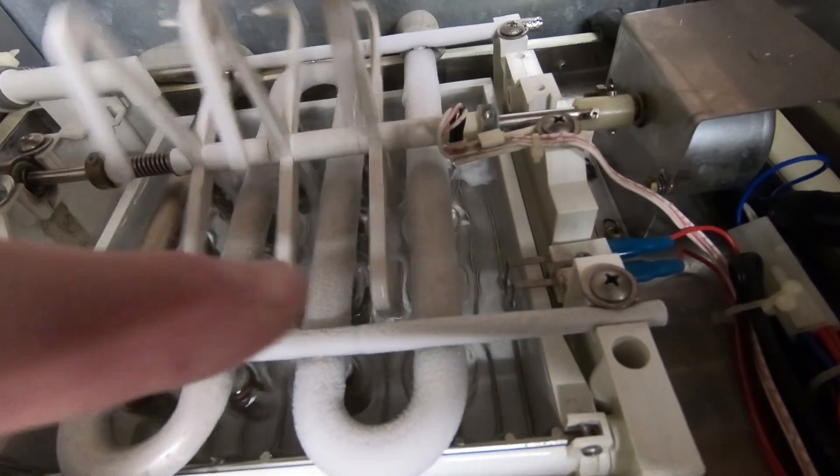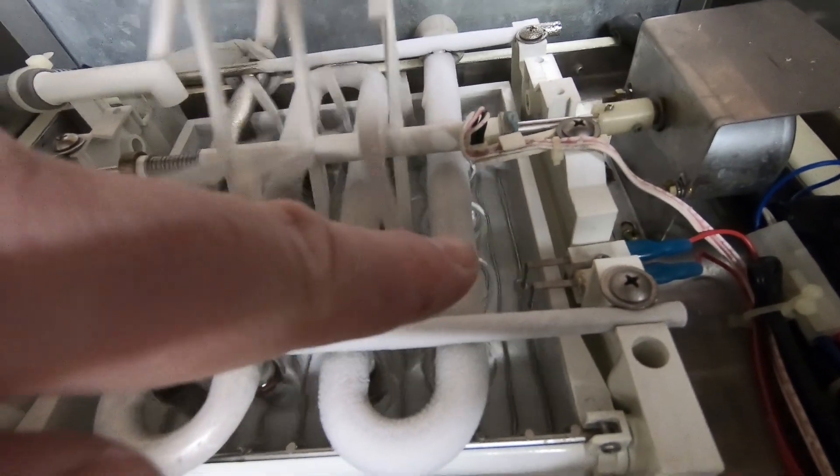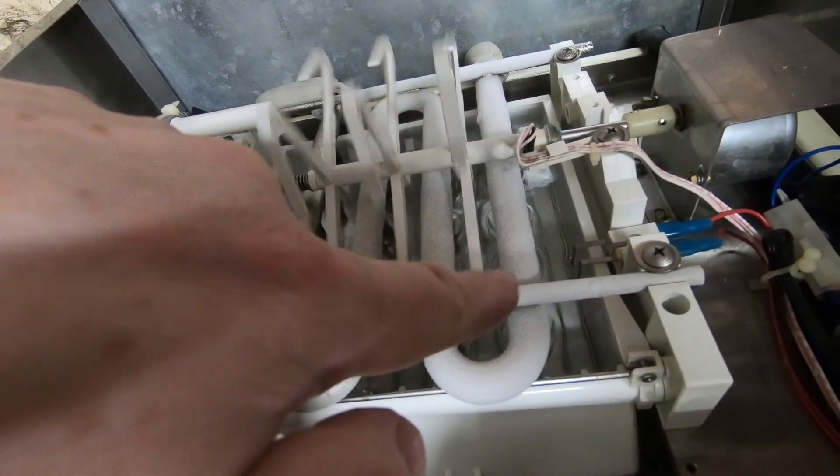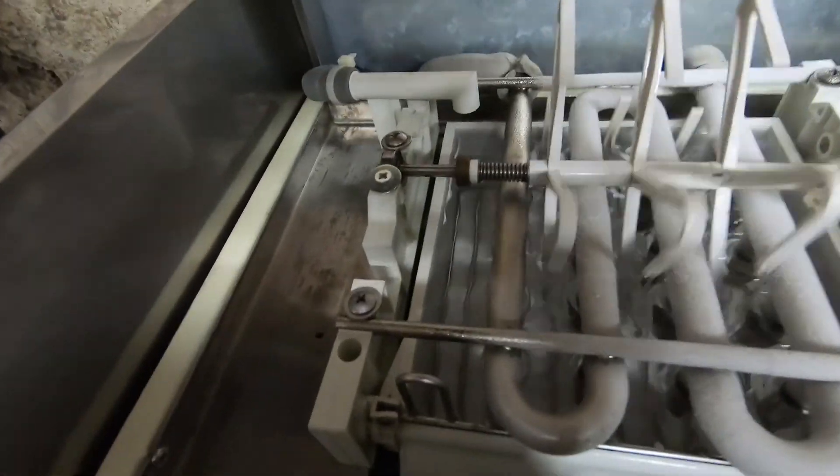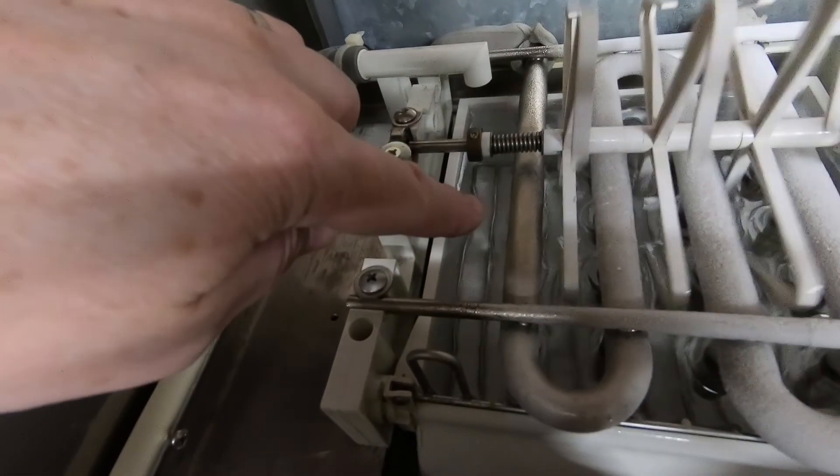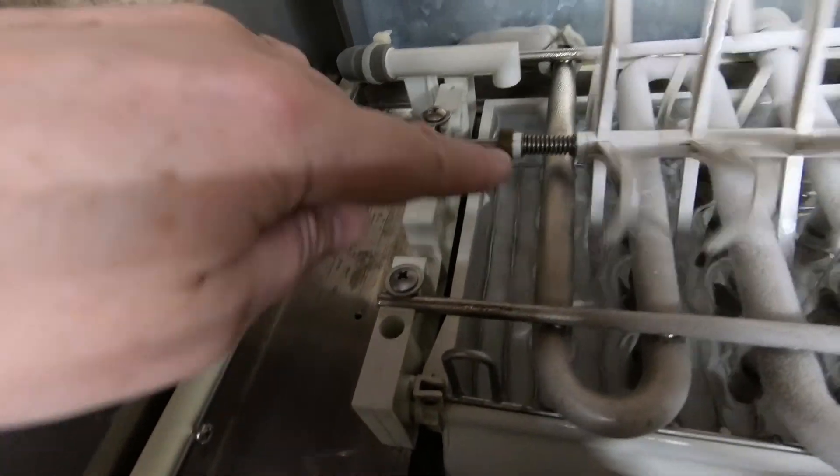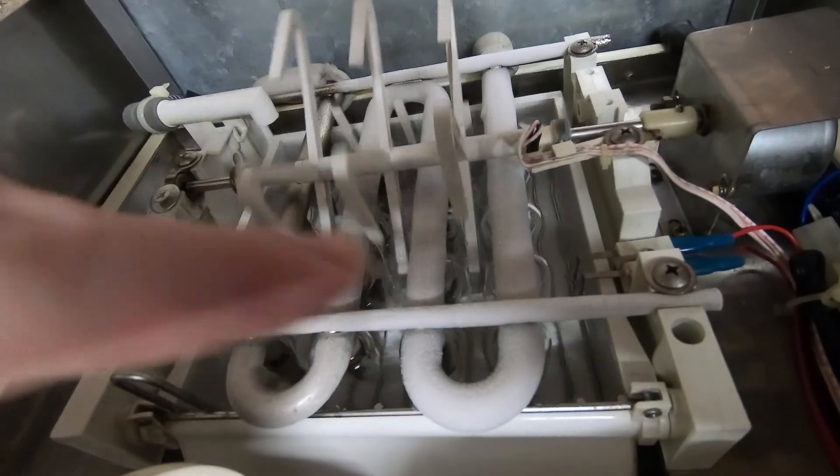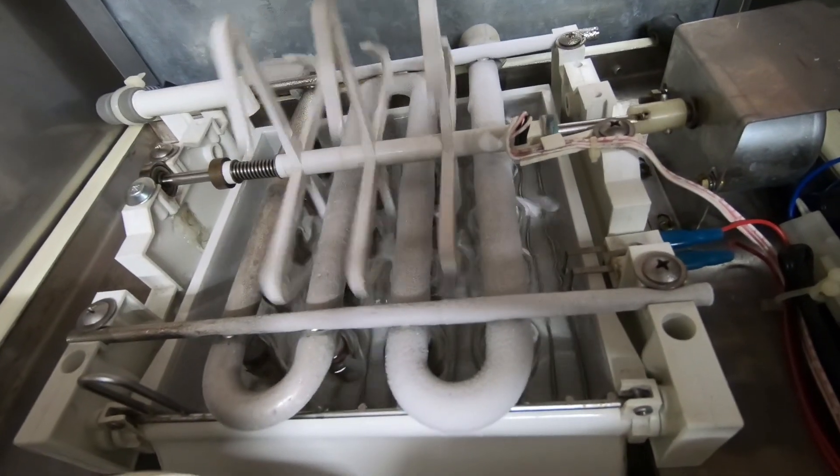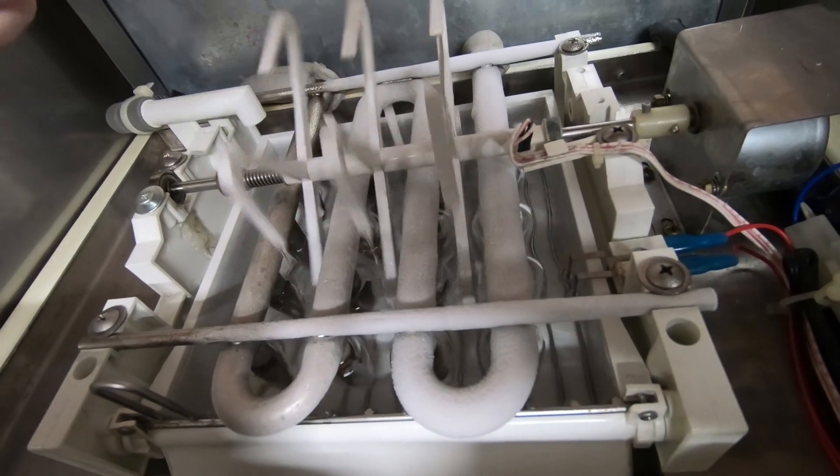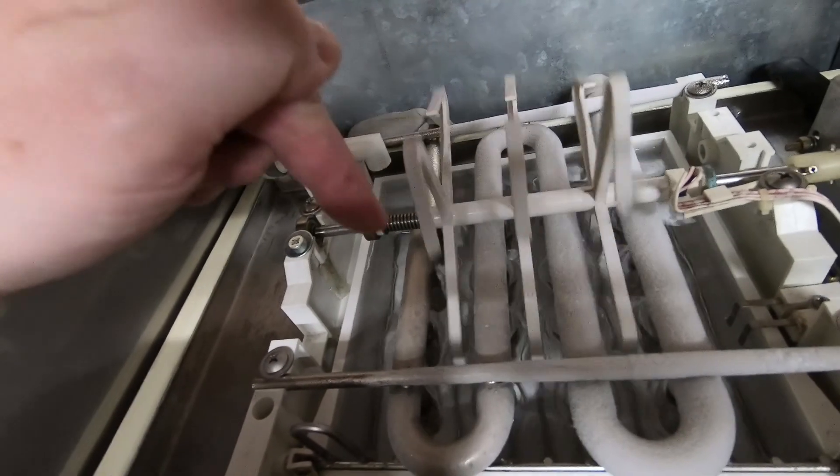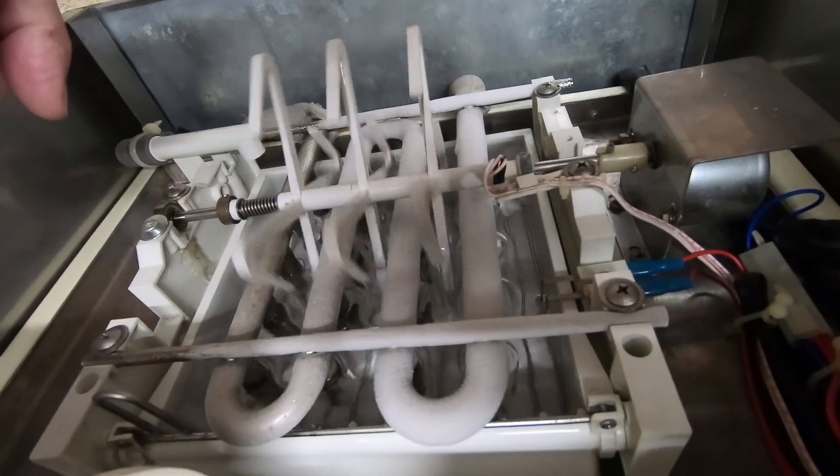Because this side always gets colder first, the ice always builds up to a bigger size on this side than it does on this side. You can see that there's not as much ice formed here. Now they do produce ice on this side, but it's always larger on this side. I think it might have been a better idea if you just had one of these detecting the size of the ice, perhaps on this side. That's how it works.